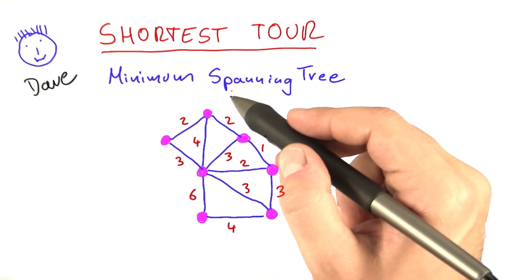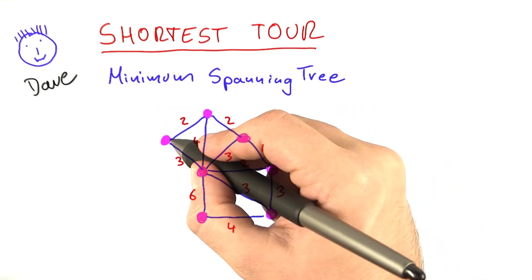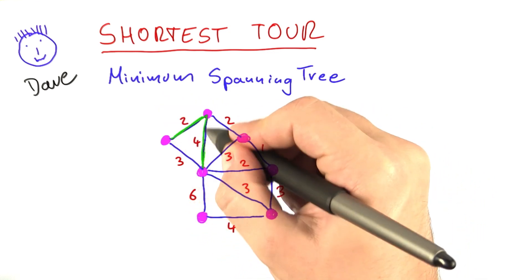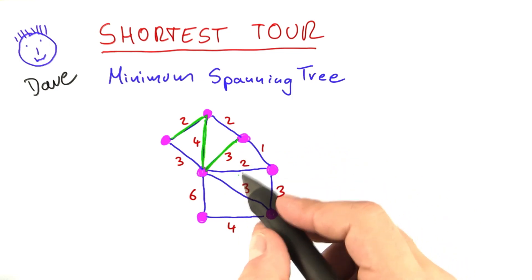Now what is a minimum spanning tree? First of all, let's take any spanning tree for this graph here. So let's say we take this spanning tree.